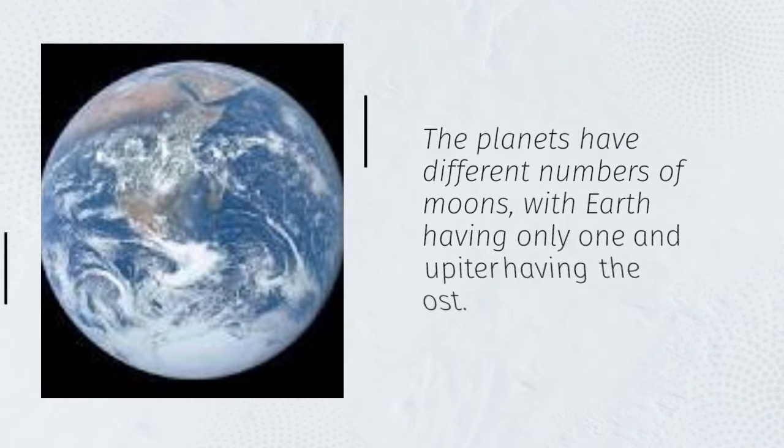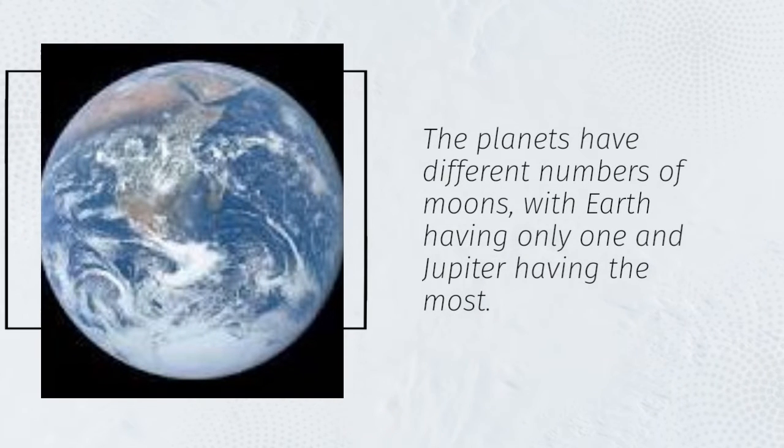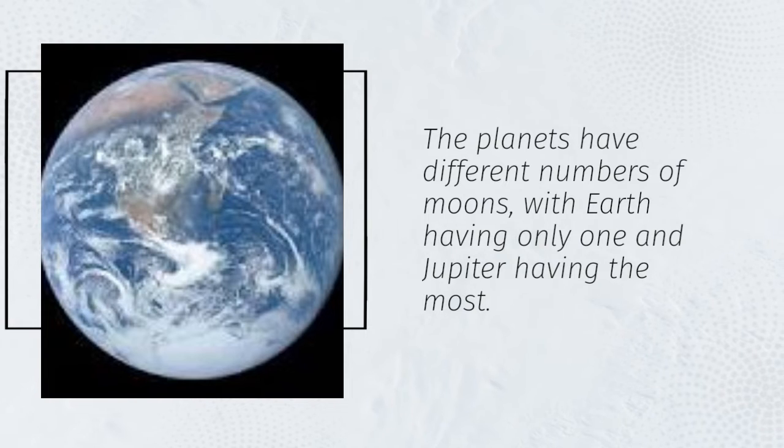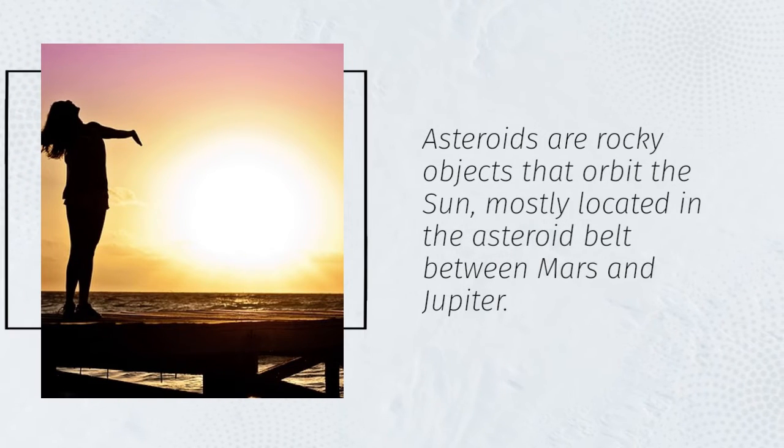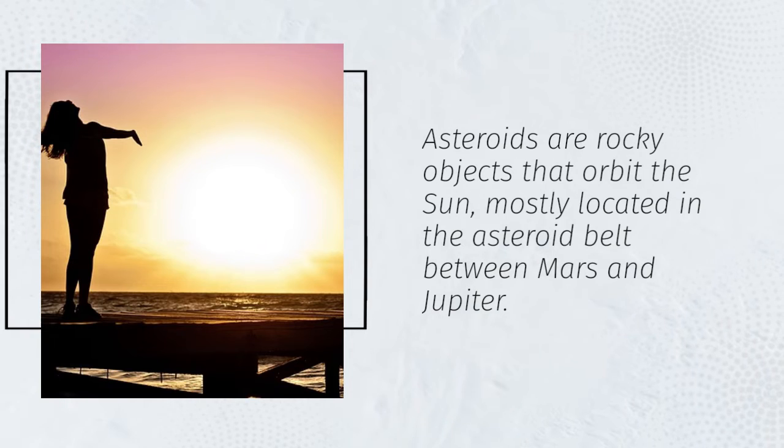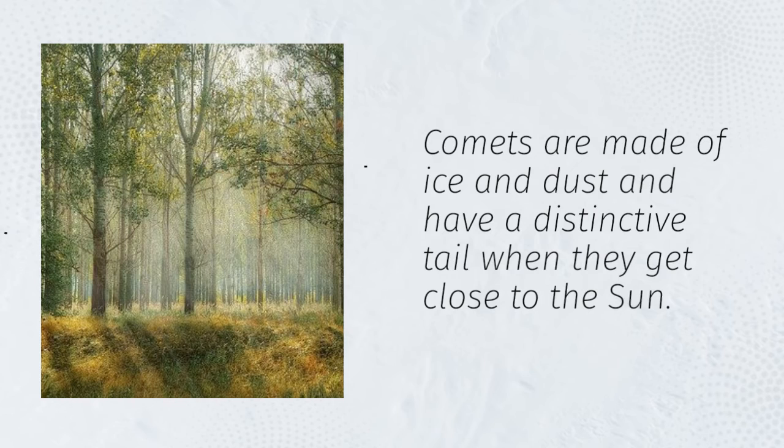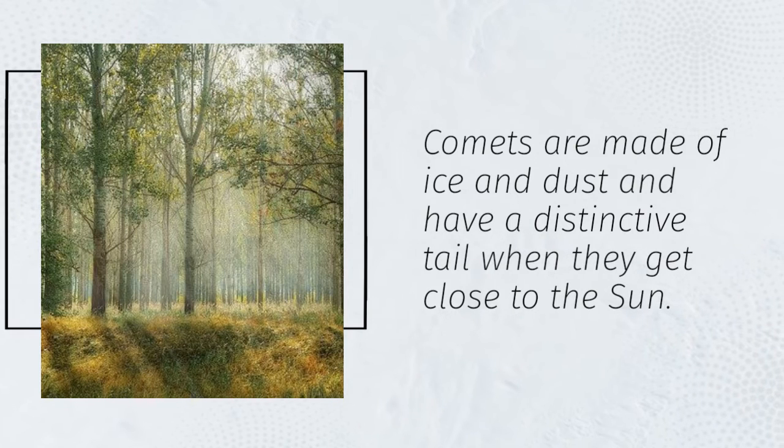The planets have different numbers of moons, with Earth having only one and Jupiter having the most. Asteroids are rocky objects that orbit the sun, mostly located in the asteroid belt between Mars and Jupiter. Comets are made of ice and dust and have a distinctive tail when they get close to the sun.